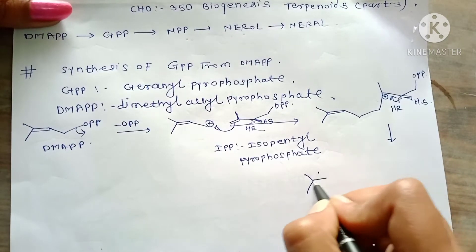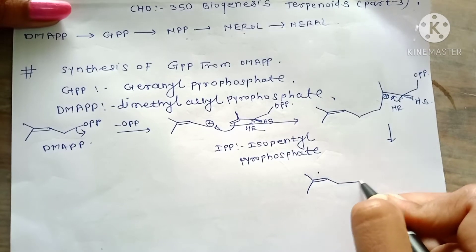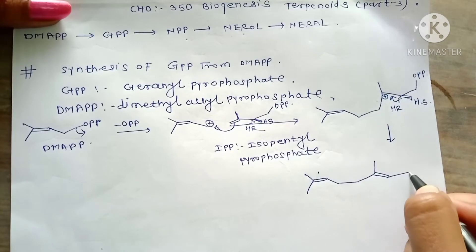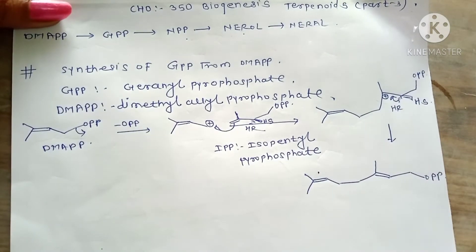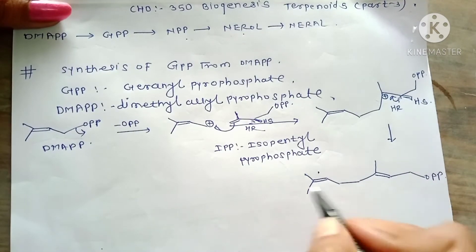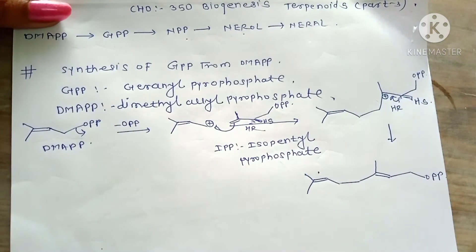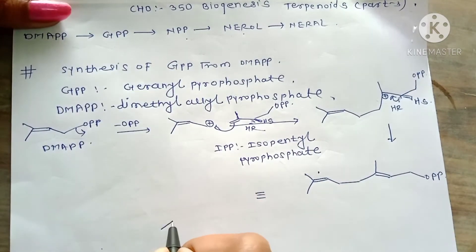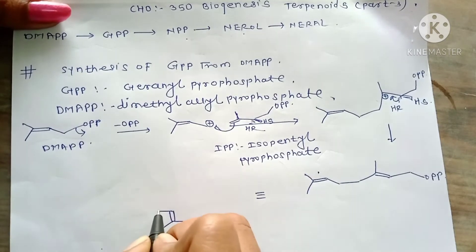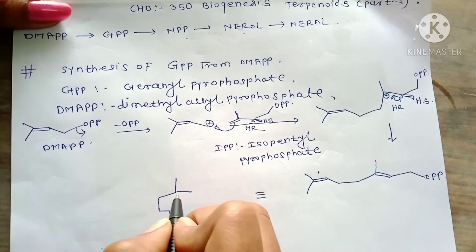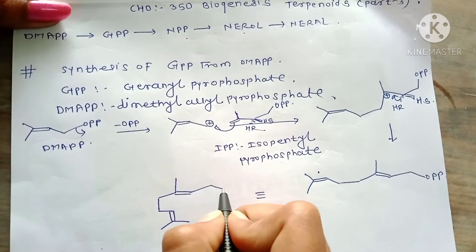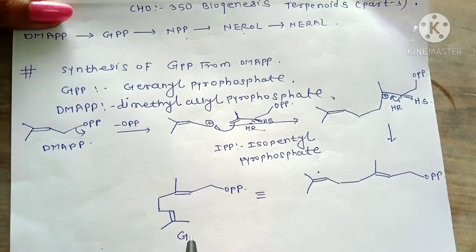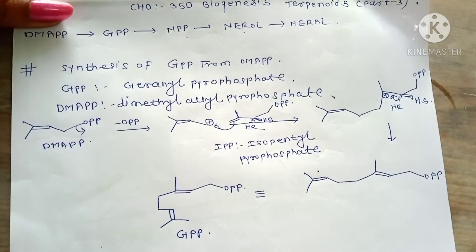The structure of GPP is: CH3, CH3 double bond, CH2, CH2, CH3 double bond, CH2, OPP. This structure can also be drawn as: CH3, CH3 double bond, CH2, CH2, CH3 double bond, CH2, OPP. This is the structure of GPP, geranyl pyrophosphate.